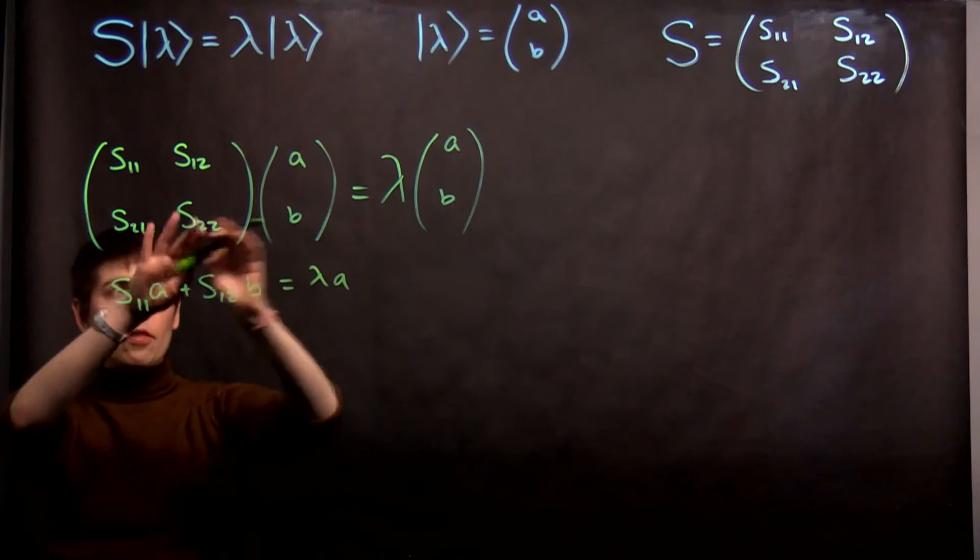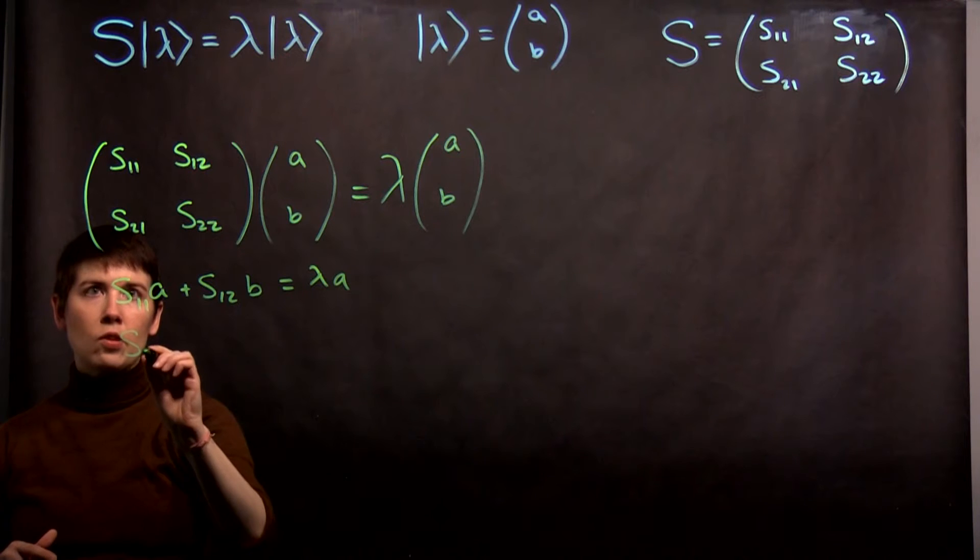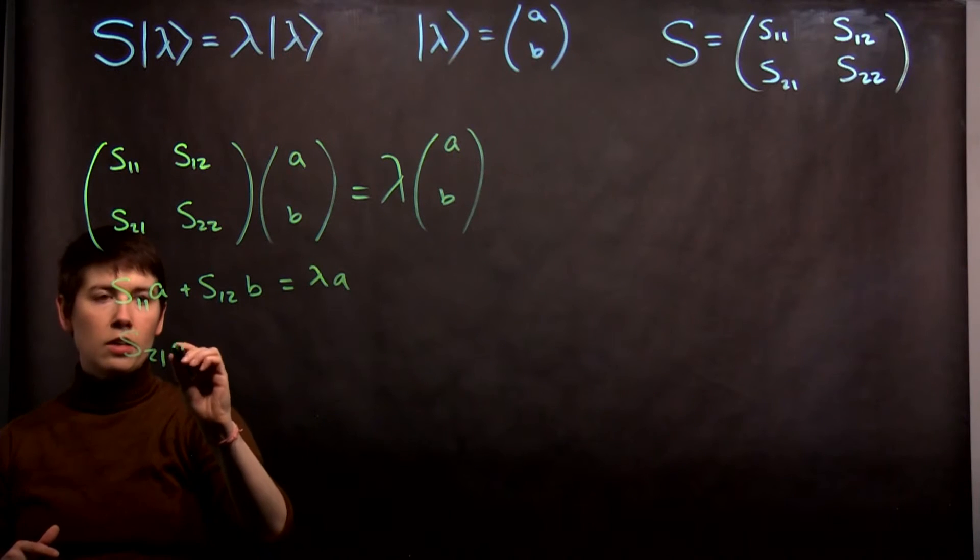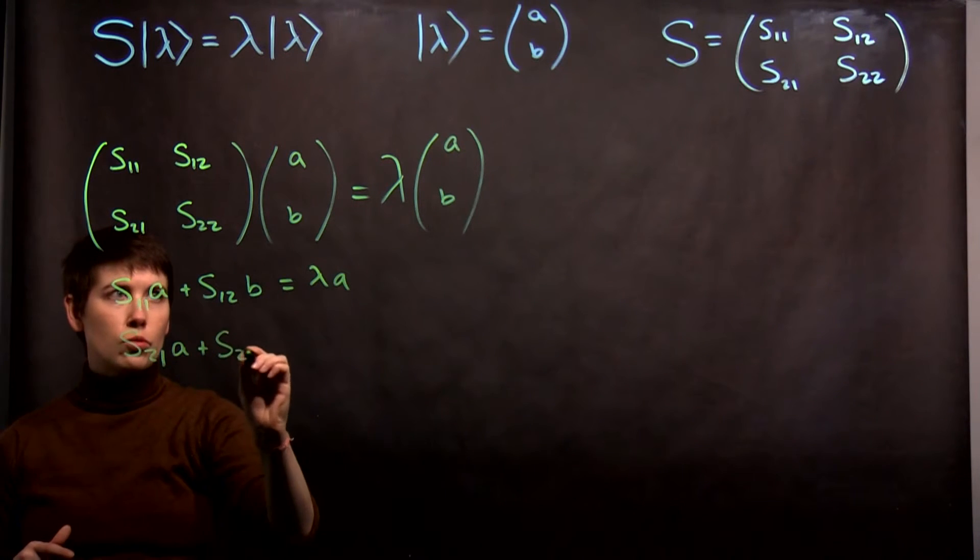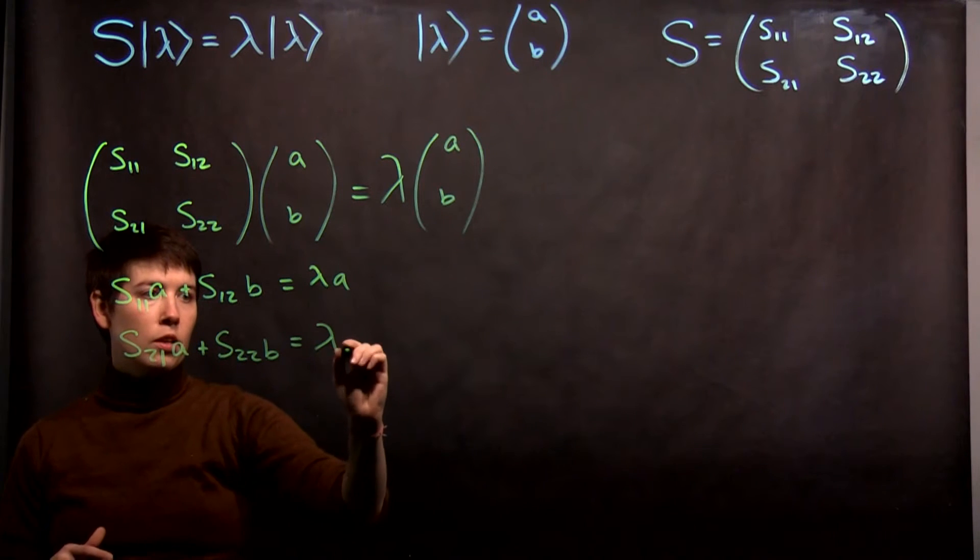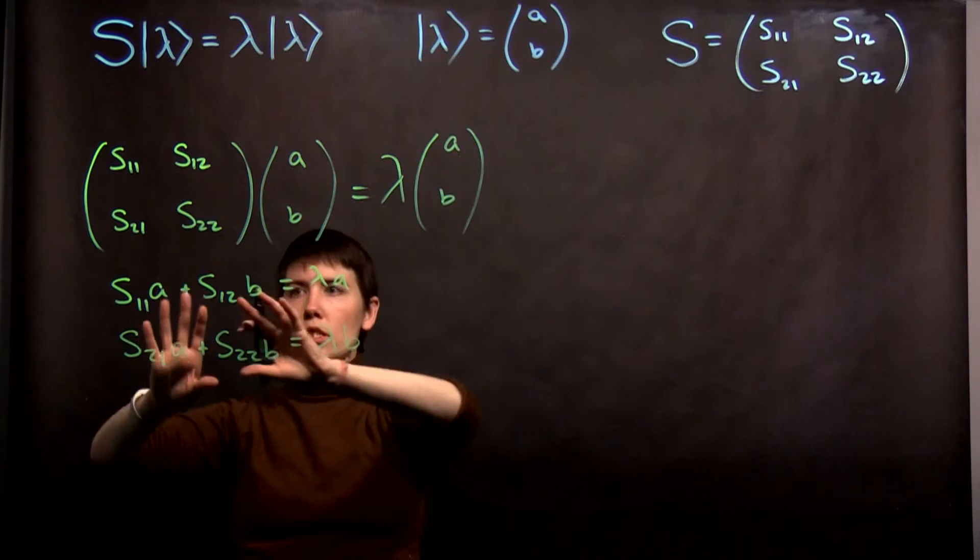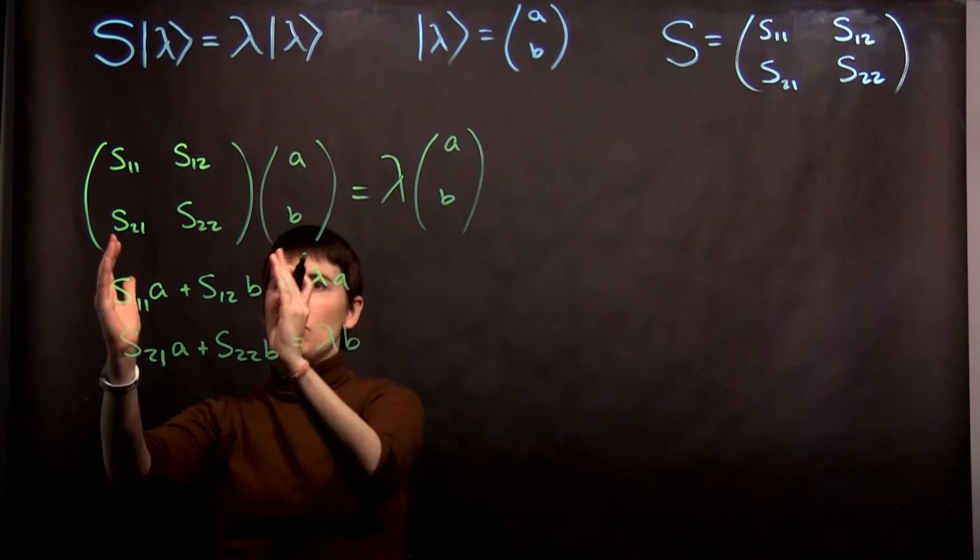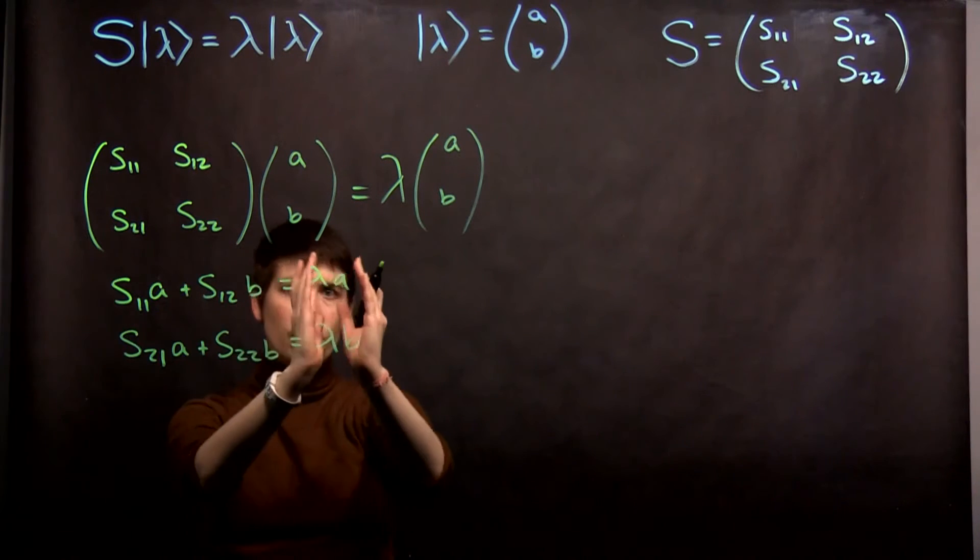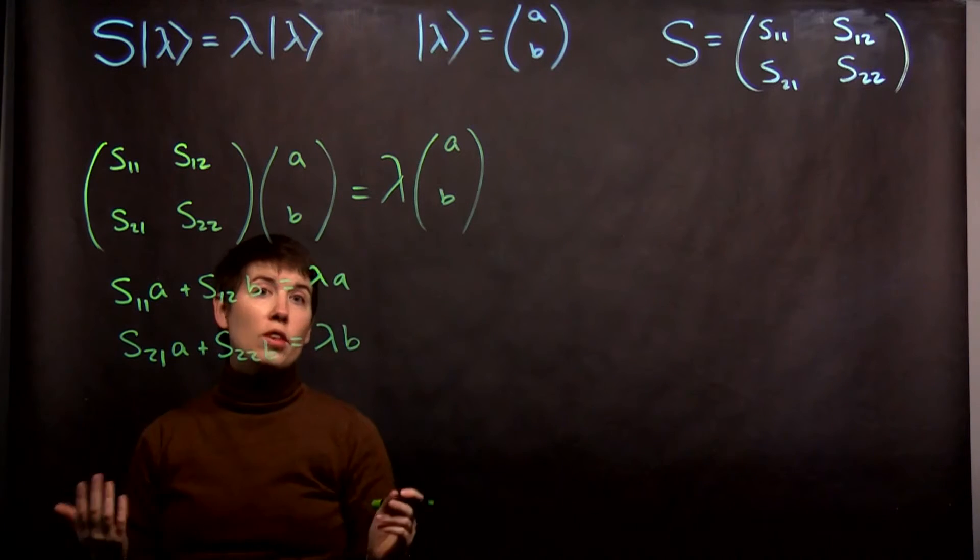On my bottom row, I'm going to have S21A plus S22B equals lambda B. What I've done here is I've actually just multiplied this across. You could imagine this is a vector, and this is a vector, but I've just broken them into two equations.